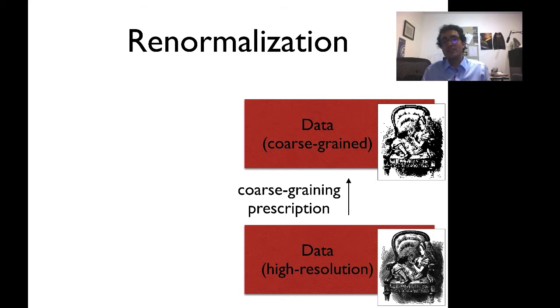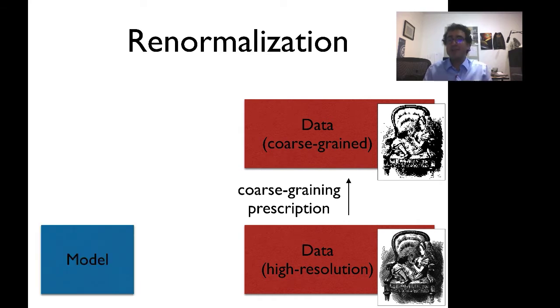So coarse graining is a central part of renormalization, but it's not the whole story. In fact, it's only half. Because as scientists, what we do is not just gather data, and we don't just simplify it. Instead, what we do is we tend to build models of that data.